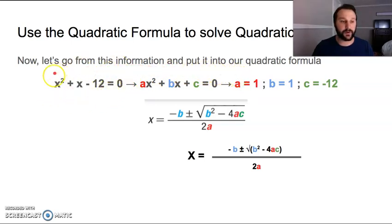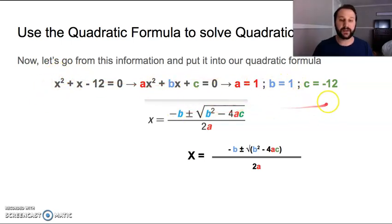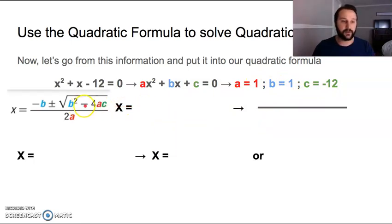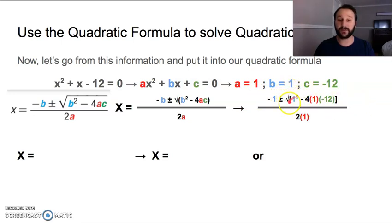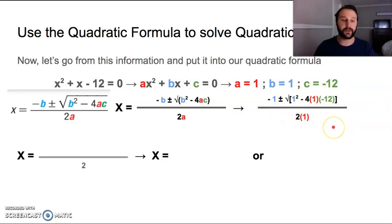A equals one — we're starting with this same equation: x squared plus x minus 12 equals zero. So a is one, b is one, and c is negative 12. Remember, there's an understood one in front of these variables; whenever there's nothing there, it's an understood one. Now we're going to plug it right into the quadratic formula and we're going to see some of these values appear. So we've got negative one plus or minus the square root of everything inside the brackets — everything inside those brackets needs to be multiplied. So one squared minus four times one times negative 12, all of that over two times one.